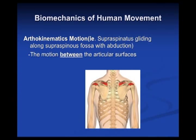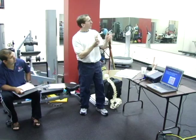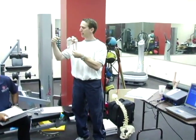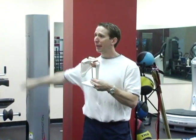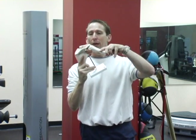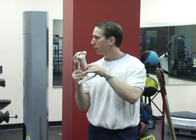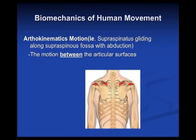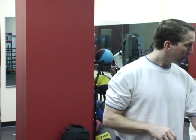Now we look at arthrokinematic motion, which means the motion between articular surfaces. If you look at Mr. Scapula here — the shoulder — the red shown is the supraspinatus, from the supraspinous fossa to the greater tubercle. It does abduction, innervated by the suprascapular nerve. When you abduct, the supraspinatus is being engaged arthrokinematically, while the humerus moves osteokinematically. Those are the two differences from a visual and anatomical point of view — important to know both.